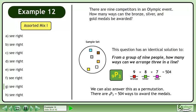We can also answer this as a permutation. There are 9P3 equals 504 ways to award the medals.